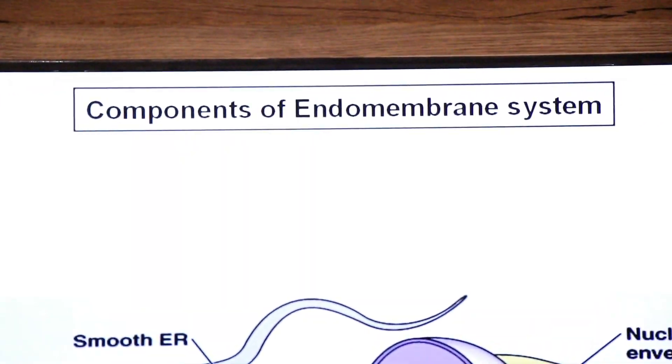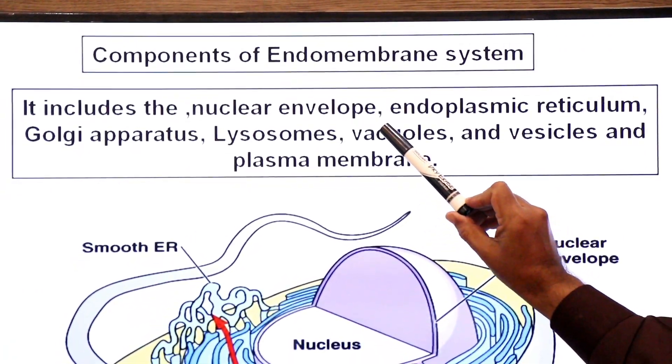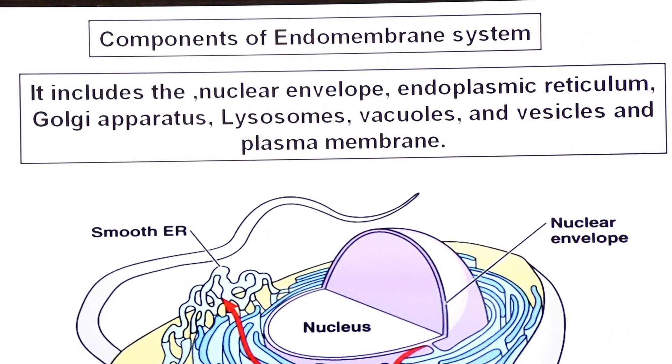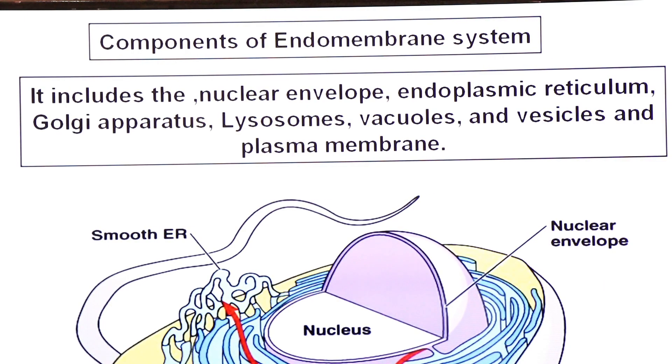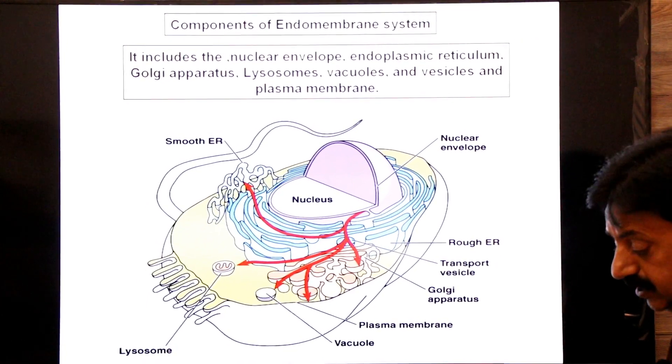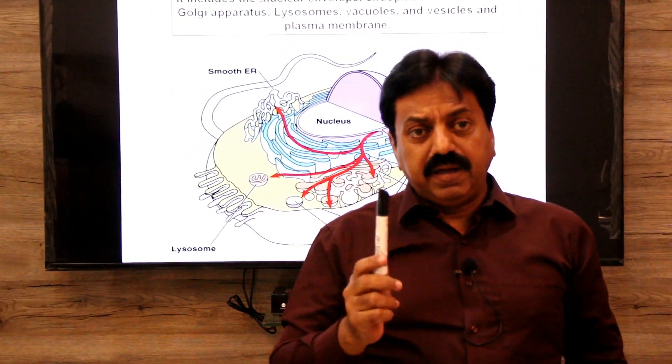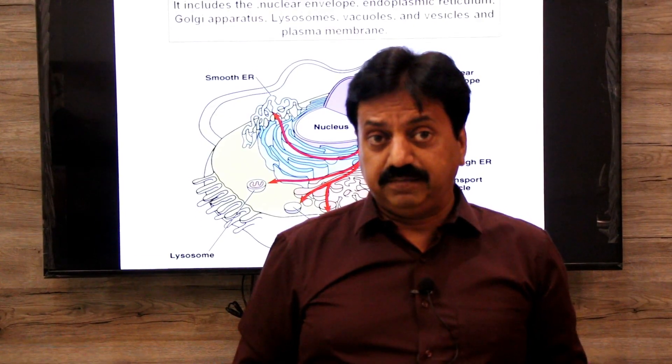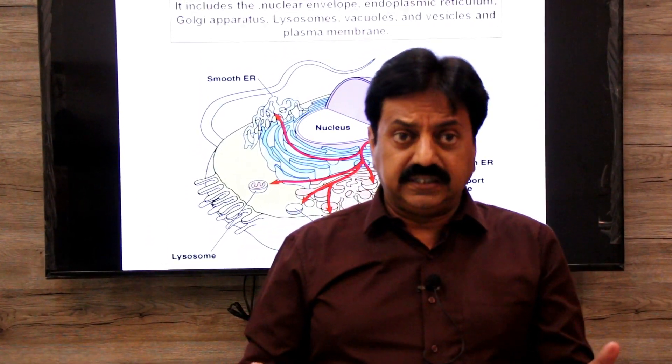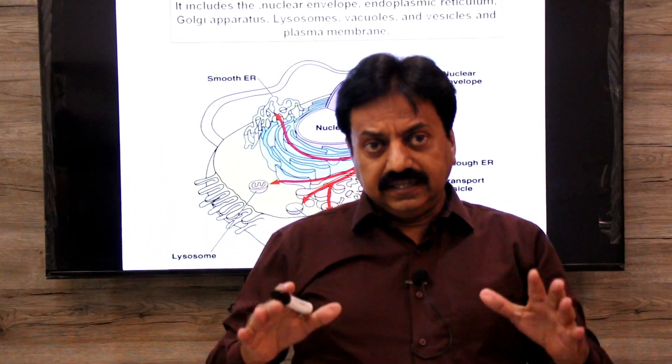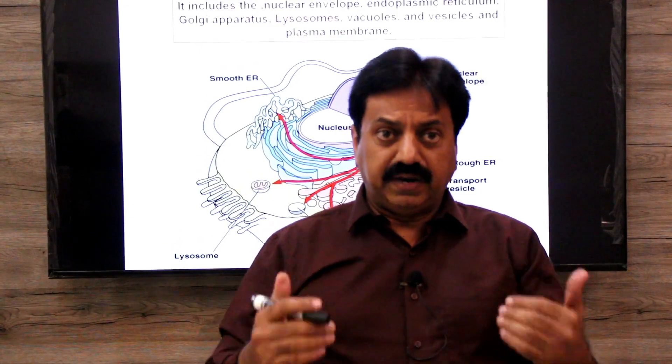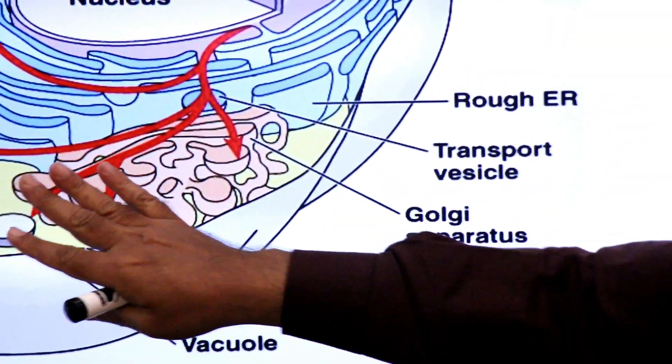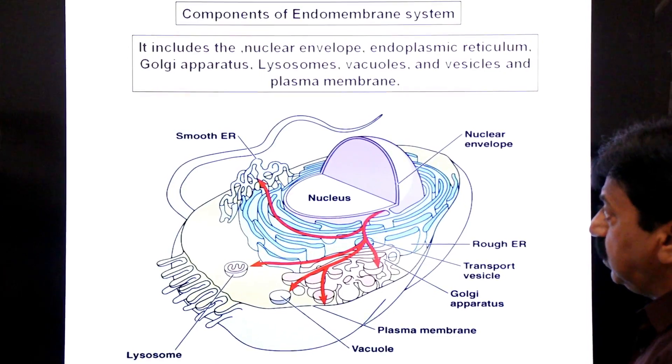Now components of endomembrane system. It includes nuclear envelope or nuclear membrane, endoplasmic reticulum, Golgi apparatus, lysosomes, vacuoles and vesicles, and plasma membrane. So these are the parts of endomembrane system. Also note this: the membranes of chloroplast and the membranes of mitochondria are not included in endomembrane system. So mitochondria and chloroplast are not parts of the endomembrane system. They are separate independent organelles. So the endomembrane system includes plasma membrane, nuclear membrane, and endoplasmic reticulum, Golgi bodies, lysosomes, and some vesicles. Focus on this and take screenshot, dear students.